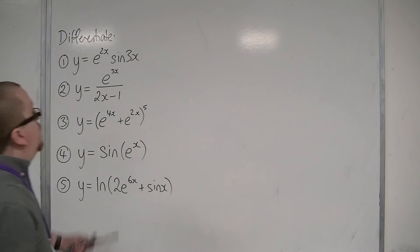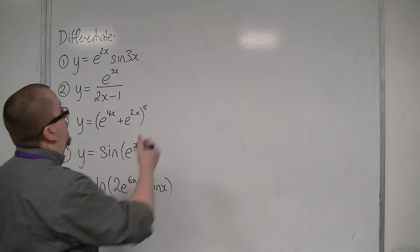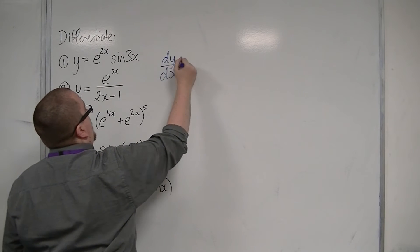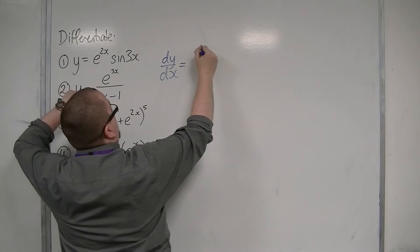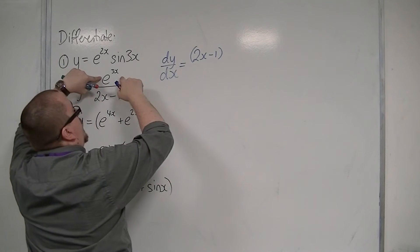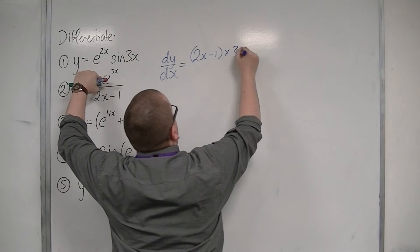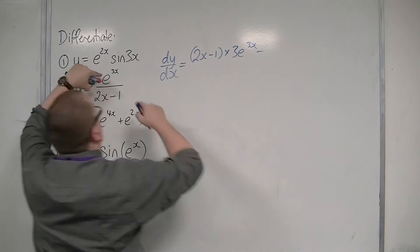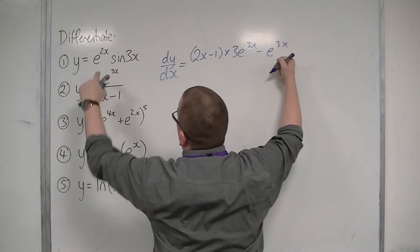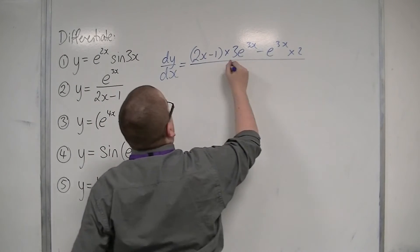For number two, we have e to the 3x over 2x minus 1. We're going to use the quotient rule. So we have the bottom, 2x minus 1, times by the derivative of the top, which is 3e to the 3x, take away the top, e to the 3x, times by the derivative of the bottom, which is 2, all over the bottom squared.